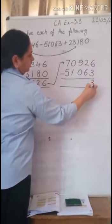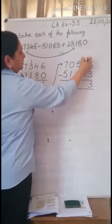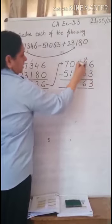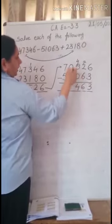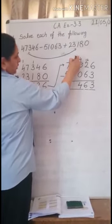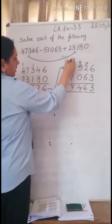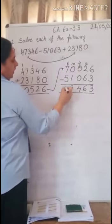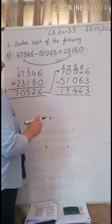6 minus 3 is 3. We can't subtract 6 from 2, so we will do borrowing. 12 minus 6 is 6. 4 is left. 4 minus 0 is 4. We can't subtract 1 from 0, so we will do borrowing. 10 minus 1 is 9. 6 is left. 6 minus 5 is 1. Our answer is 19,463.